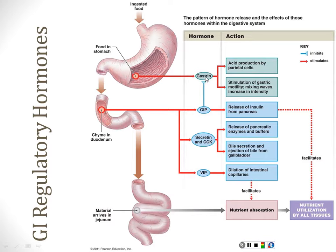Gastrin comes from the stomach and also from the duodenum, and it promotes gastric activity. Gastric inhibitory peptide inhibits gastrin. Secretin stimulates secretion from the pancreas. CCK stimulates secretion from the liver and gallbladder. VIP dilates intestinal capillaries. Red indicates stimulation, blue indicates inhibition on this diagram.